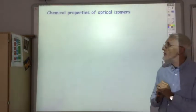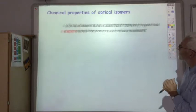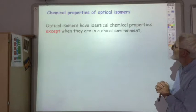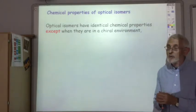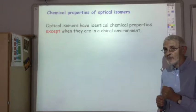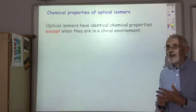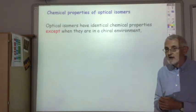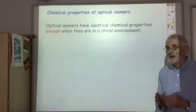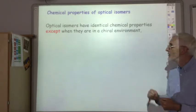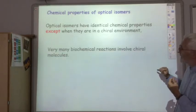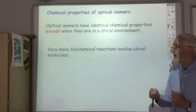Let's look at the chemical properties of optical isomers. The optical isomers have identical chemical properties except when they are in a chiral environment. Very many biological reactions are in a chiral environment, so optical activity is very important when it comes to biochemical reactions, as a lot of biochemical reactions will involve chiral molecules.